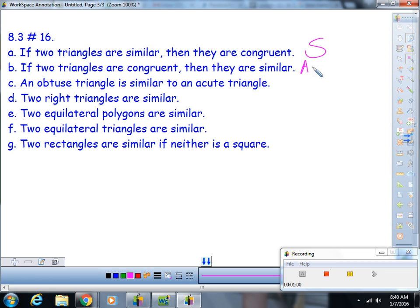Part C: An obtuse triangle is similar to an acute triangle. Well, those are mutually exclusive things. You cannot be an obtuse triangle and also be an acute triangle, so there's no way they will have the exact same angles. That's never.